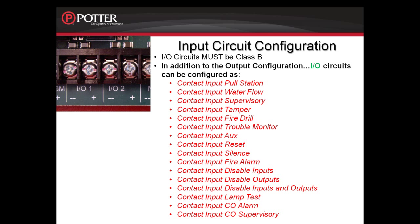This list is found in the software, and each circuit can be configured individually as to what you want to monitor. For example, if I want to monitor a conventional duct detector for a supervisory condition, I can set up the I/O circuit to be contact input supervisory. If I wanted to monitor a CO detector with one of the I/O circuits and I wanted that to be an alarm condition, I would set up the I/O circuit as contact input CO alarm.